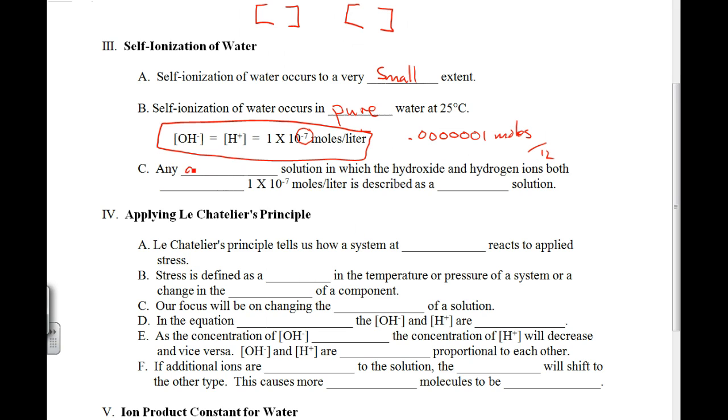Any aqueous solution in which the hydroxide and hydrogen ions both equal 1 times 10 to the negative 7 moles per liter is described as a neutral solution.